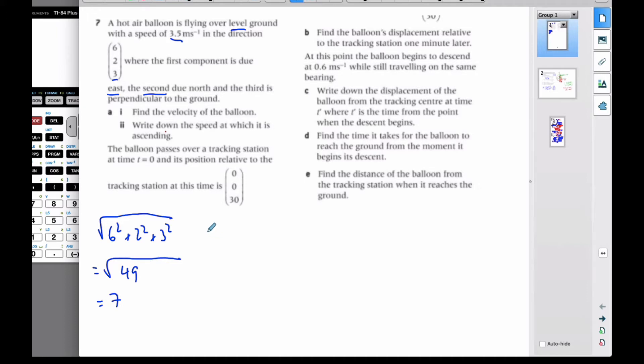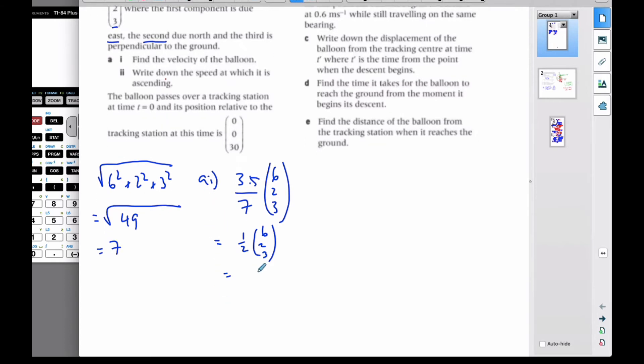So then my velocity vector is going to be 3.5 over 7 times this vector here. If I simplify that, that equals 1/2 times the vector (6, 2, 3). So my velocity vector is (3, 1, 1.5).